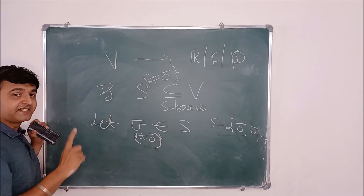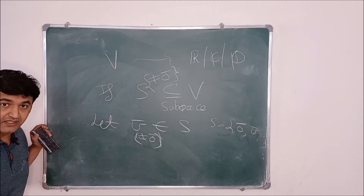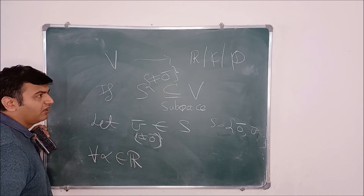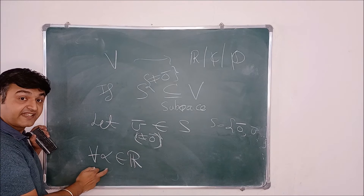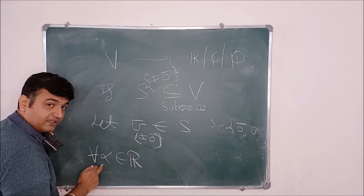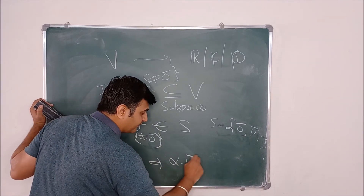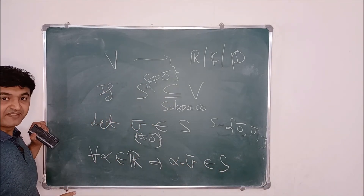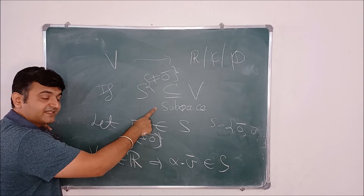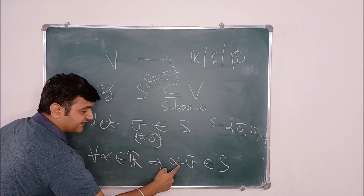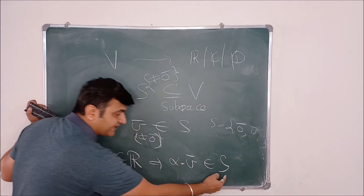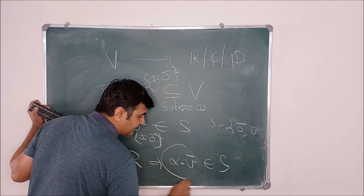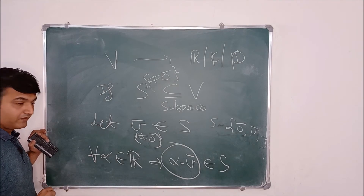Because S is a subspace, it satisfies the scalar multiplication property. Therefore, if you take any α belonging to the real numbers, complex numbers, or rationals — which are infinite in number — we know that α times v̄ belongs to S, by the property of a subspace. Since α ranges over an infinite field, these give us infinitely many vectors.